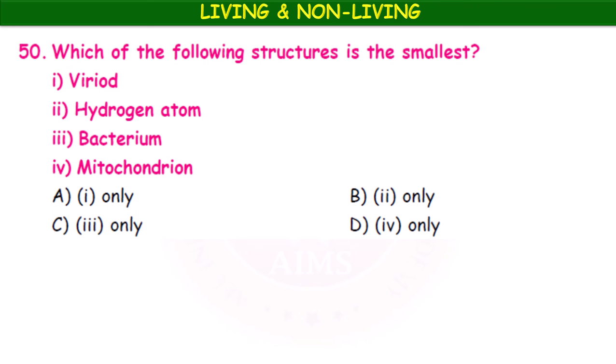Which of the following structures is the smallest — viroid, hydrogen atom, bacterium, or mitochondria? A viroid is a particle of a virus. A virus itself is very microscopic, so a viroid is ultramicroscopic. The smallest one is option A — viroid.